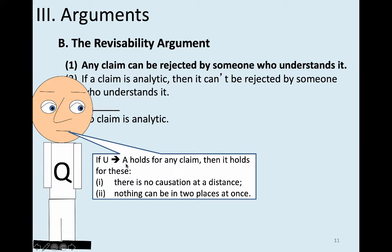So when a claim is analytic, the idea goes, there will be some sort of understanding-assent link. If an understanding-assent link holds for any claim, then it holds for these two claims. Claim one is: there is no causation at a distance. Claim two is: nothing can be in two places at once.